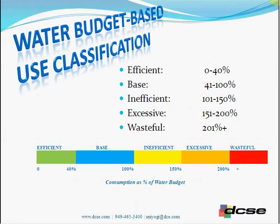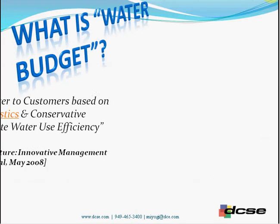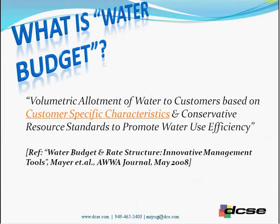Let's look at the typical segments. Just because you are allocated a certain amount of water does not mean you have to spend it all. You can be efficient and use only 40% of the total allocated budget, or you can be wasteful and be penalized by a higher rate. These are the typical classifications of water users against their allocated water budget. The formal definition of water budget is: a volumetric allotment of water to customers based on customer-specific characteristics and conservative resource standards to promote water use efficiency — in simple words, allocate enough water for an efficient user without forcing a change in lifestyle. This promotes efficiency and does not reward wasteful users.